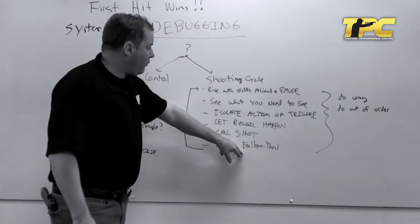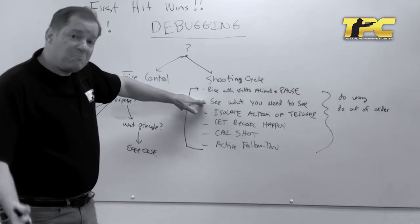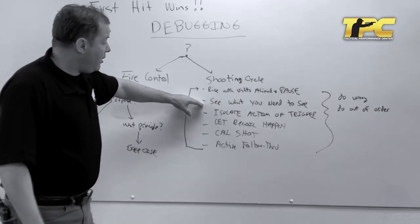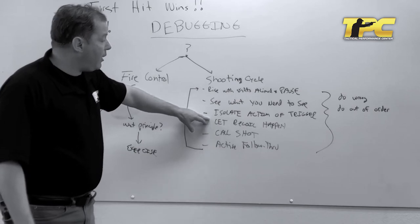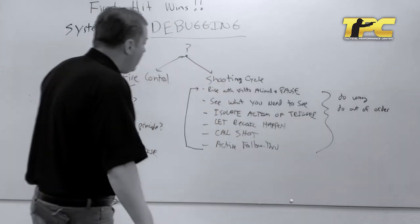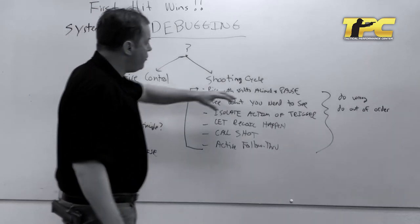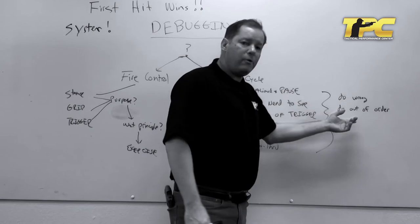Let's say I'm doing the active follow-through when I should be isolating the trigger. Right, that's anticipation. I'm not letting recoil happen, that's an example of doing it wrong. All right, so once you know what principle, once you know what part you're doing wrong or what you're doing out of order, then you design an exercise.